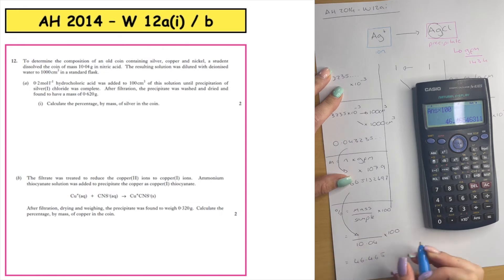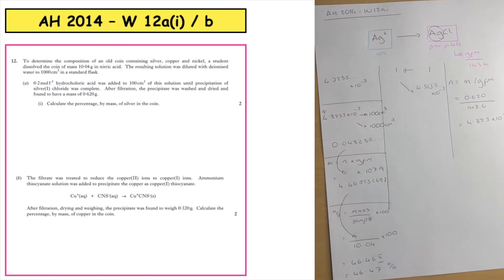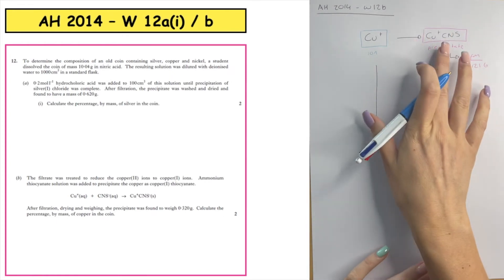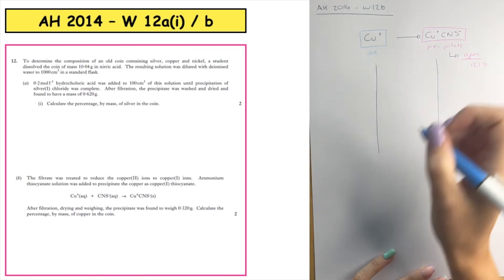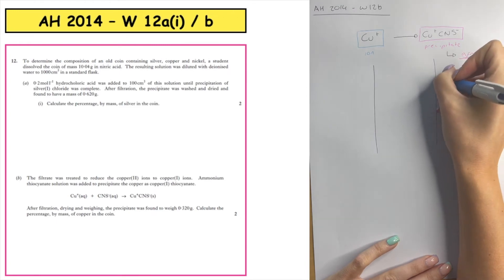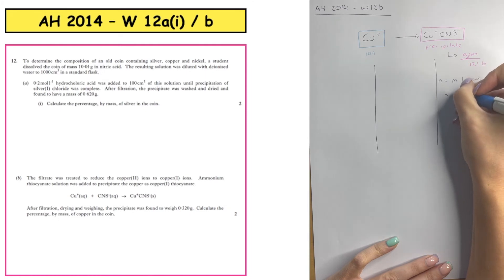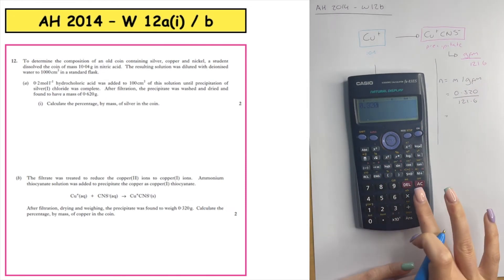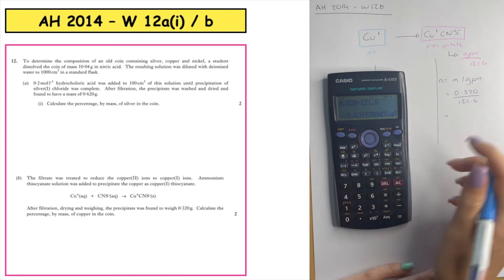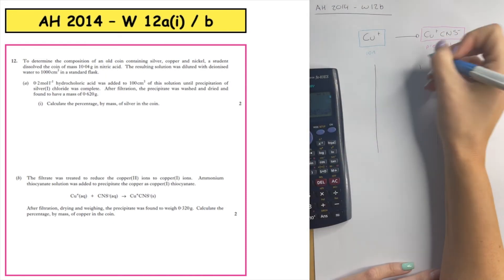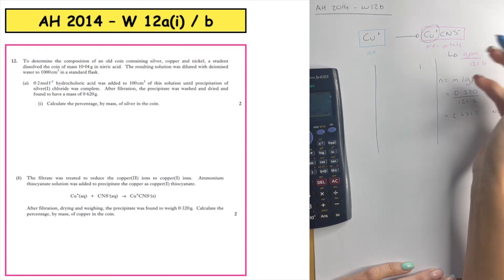Dividing by 10.04 and multiplying by 100 gives a percentage of 46.47%. Part (b) of the question is very similar except it involves copper and a new precipitate, and the formula for that precipitate is given. We need to calculate the percentage by mass of copper in the coin. Looking at the precipitate, we have its GFM and a given mass, so we calculate moles: moles = mass ÷ GFM. The mass of the precipitate is 0.320 g, divided by 121.6.